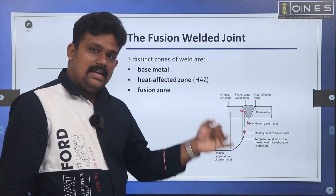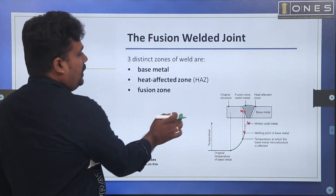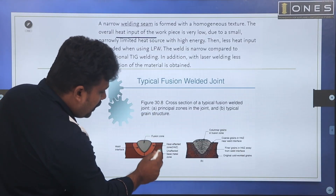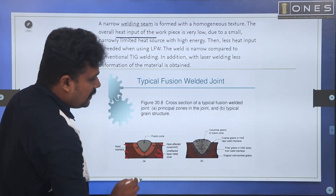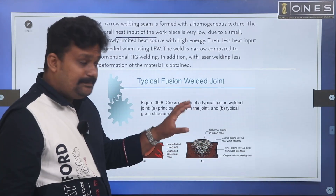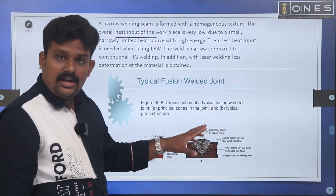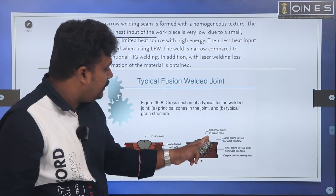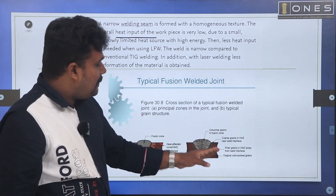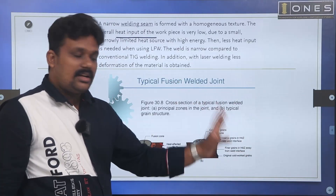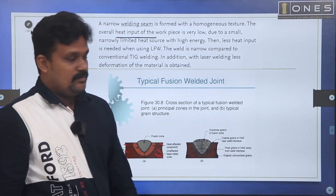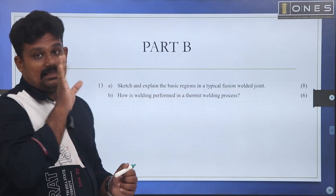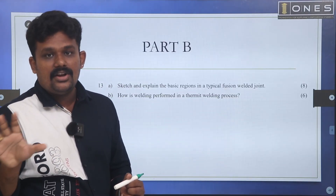The heat affected zone and fusion zone are the key regions. On the microstructure level, the grain structure comes from the fusion zone with coarse grains. In the base metal, the original cold-worked grains are preserved. The fusion welding typical regions show the heat and grain structure accordingly.